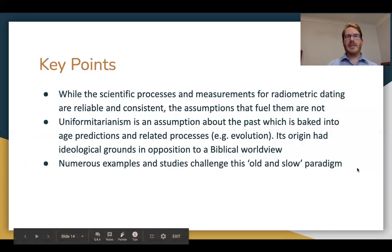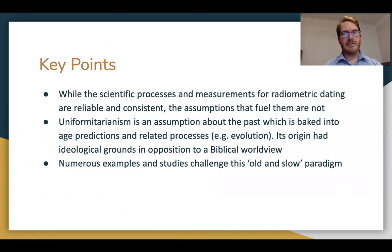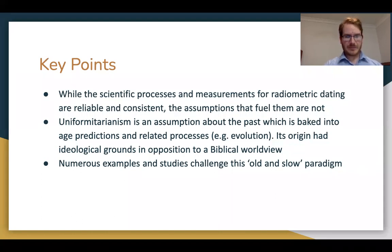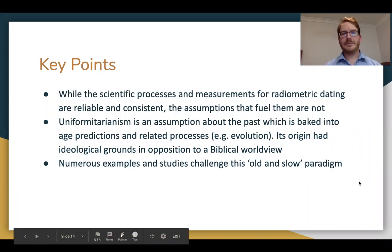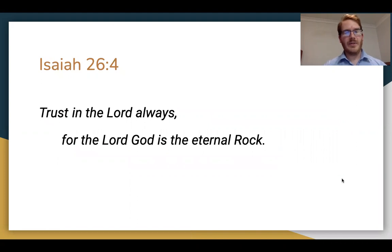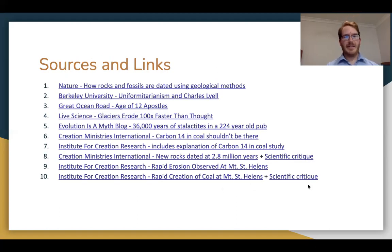To recap: we looked at how radiometric dating happens — while the scientific processes and measurements are quite reliable and consistent, the assumptions that fuel them are not. One example is uniformitarianism — assumptions about how long things take, baked into just about everything including evolution. The origin of this had ideological grounds and opposition to a biblical worldview. We also showed examples of studies that challenge the old-and-slow paradigm: some things can in fact happen quickly. Since we're talking about rocks, I'll finish with Isaiah 26:4 — 'Trust in the Lord always, for the Lord God is the eternal rock.' All sources and links are listed at the end — go through them and decide for yourself.